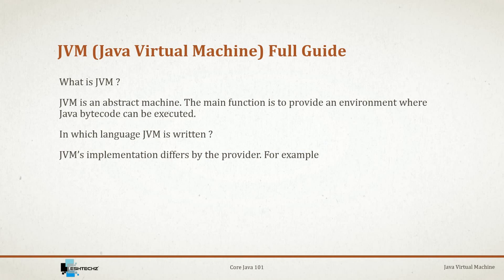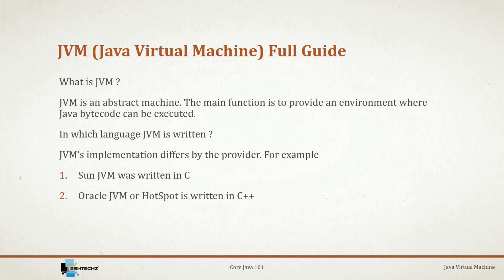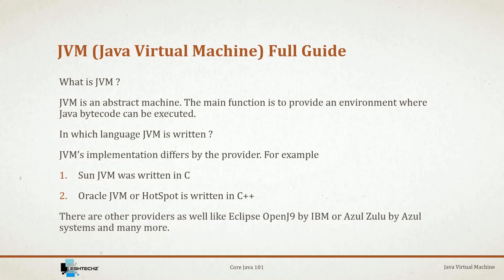For example, the JVM which originally came with Java was Sun JVM, and at that time it was written in C. The one which most of us use — Oracle JVM, otherwise known as HotSpot — is written in C++. There are multiple other JVMs available in the market like Eclipse OpenJ9 by IBM, or Azul Zulu by Azul Systems, and many more.